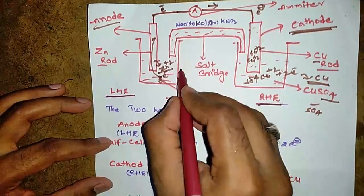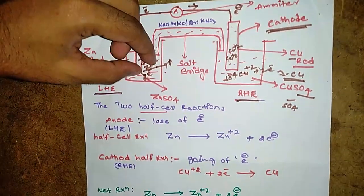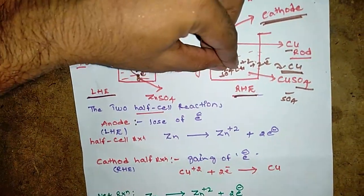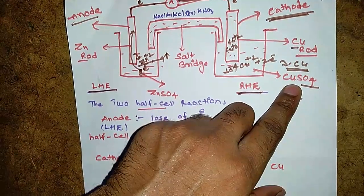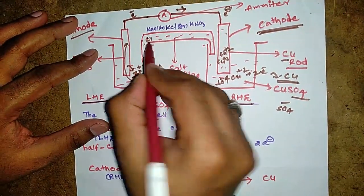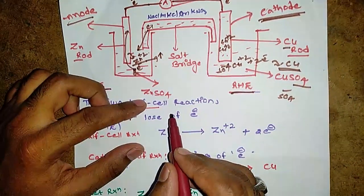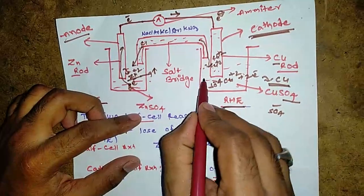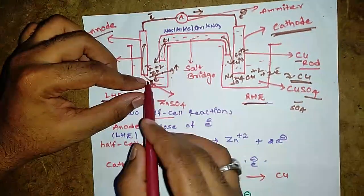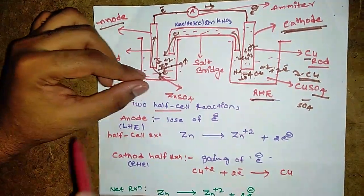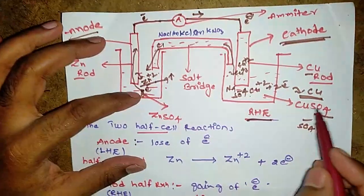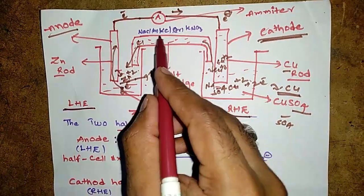As Zn²⁺ ions build up in the zinc sulfate solution, chloride ions from the salt bridge move towards the zinc sulfate solution, and sodium ions from the salt bridge move towards the copper sulfate solution. This maintains the electrical neutrality of both the zinc sulfate and copper sulfate solutions.